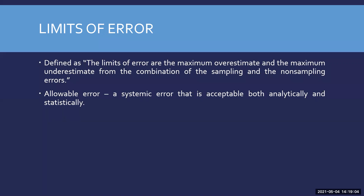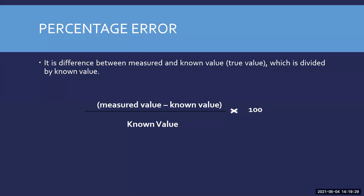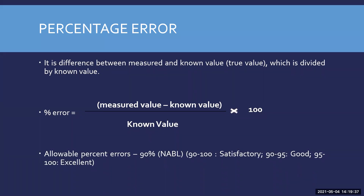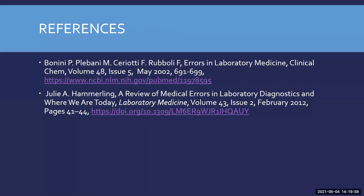Allowable error is a systematic error that is acceptable both analytically and statistically. Governing bodies can give us a rough number, but for a very accurate method you should define your own limits of error and allowable error. Percentage error is the difference between measured and known value divided by known value into 100. Based on NABL, 90 percent accuracy is currently acceptable; between 90 to 95 is good and 95 to 100 is excellent.